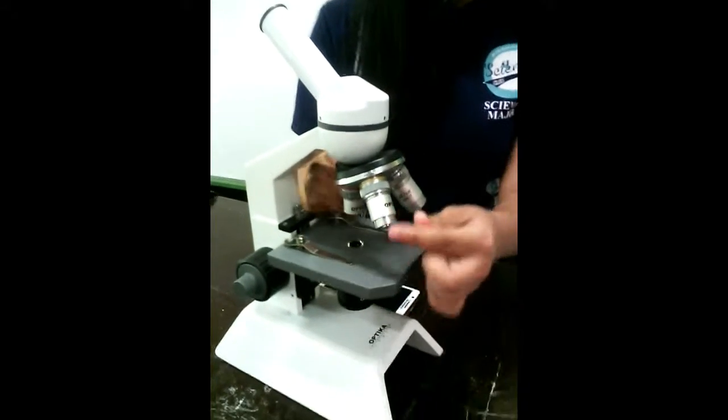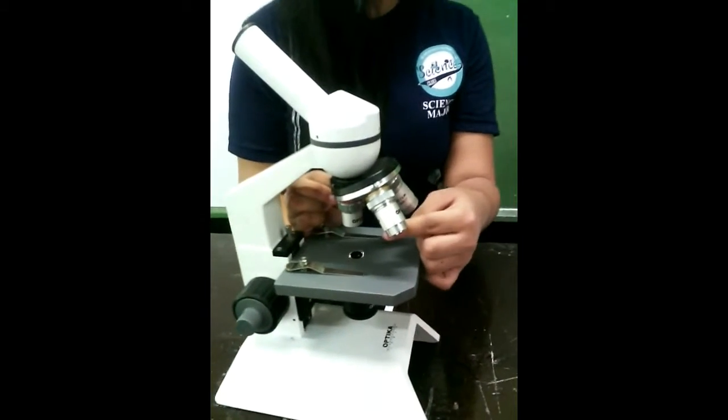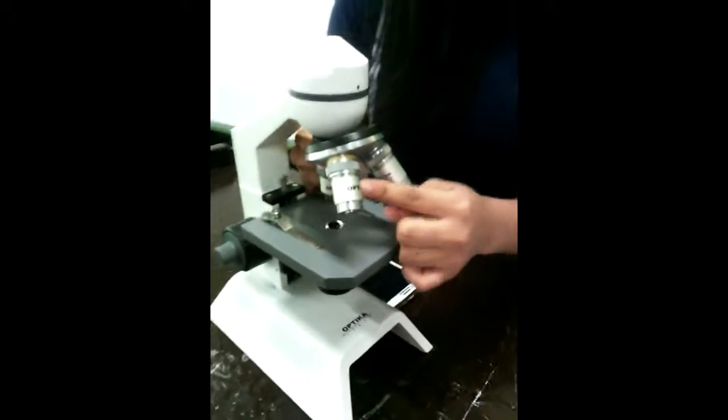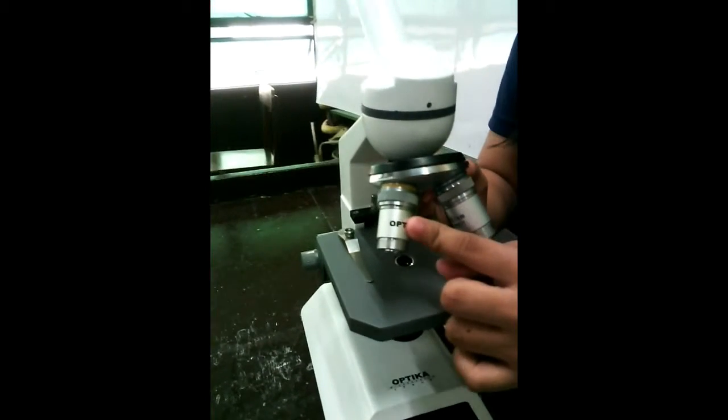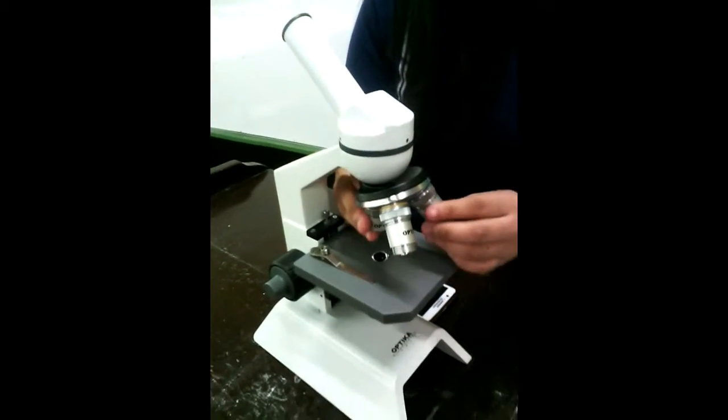The low power objective is a shorter cylinder with a large lens opening. It is used to observe the general outline and locate the various parts of the specimen. It is focused using the coarse adjustment knob.